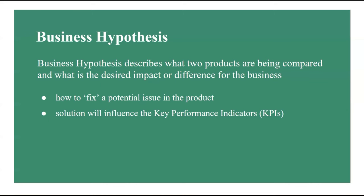A 5% significance level also means you have a significant result difference between control and experimental groups within a 95% confidence interval. Like the power, the choice of alpha depends on the nature of the test and business constraints. For instance, if running this A/B test involves high engineering costs, the business might pick a higher alpha to make it easier to detect treatment effects. On the other hand, if implementation costs of the proposed version are high, you can pick a lower significance level, since the proposed feature should have a big impact to justify the cost.